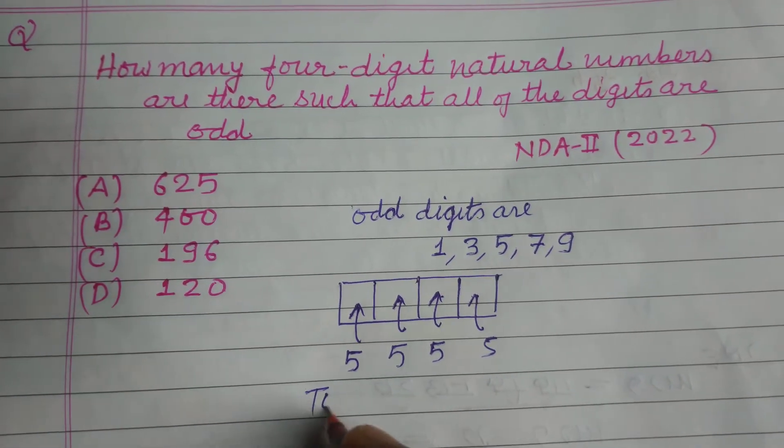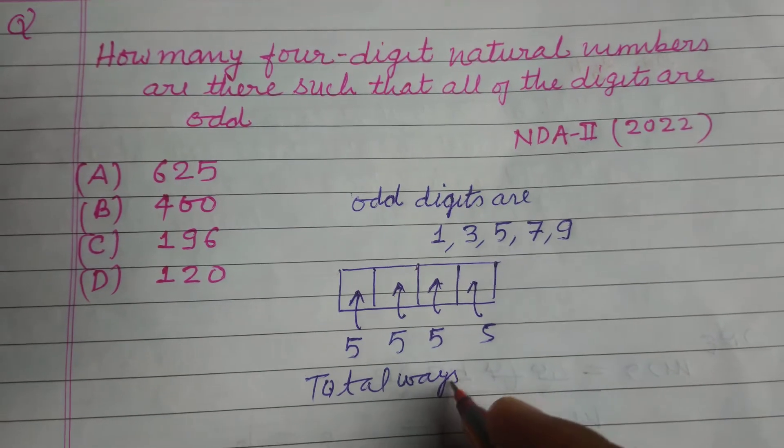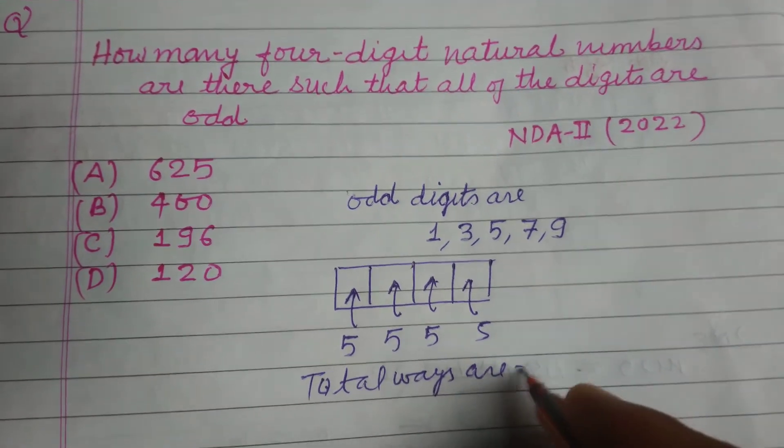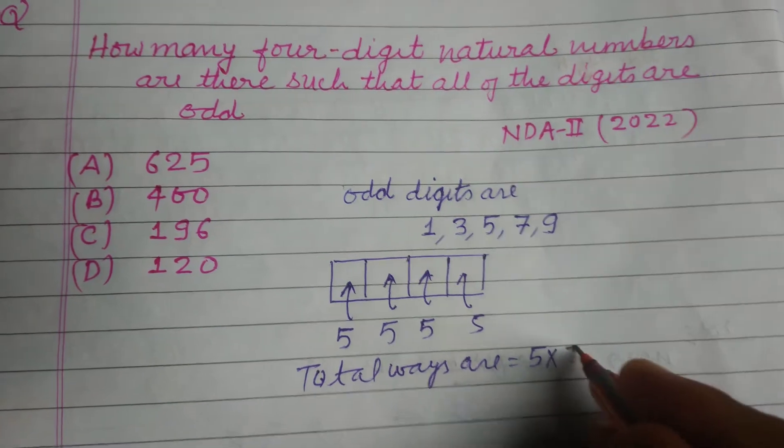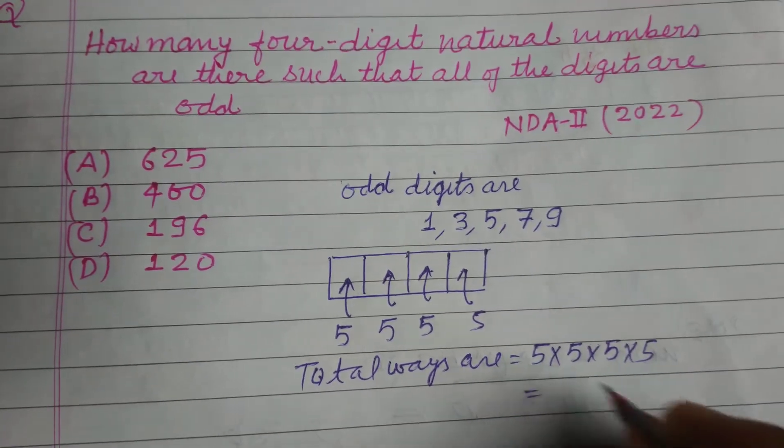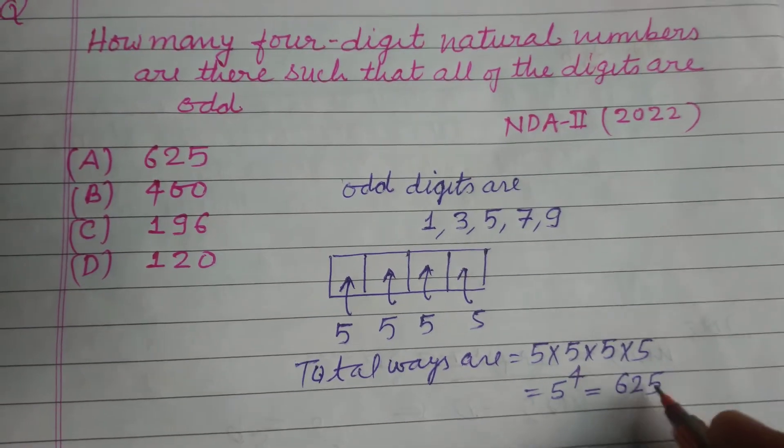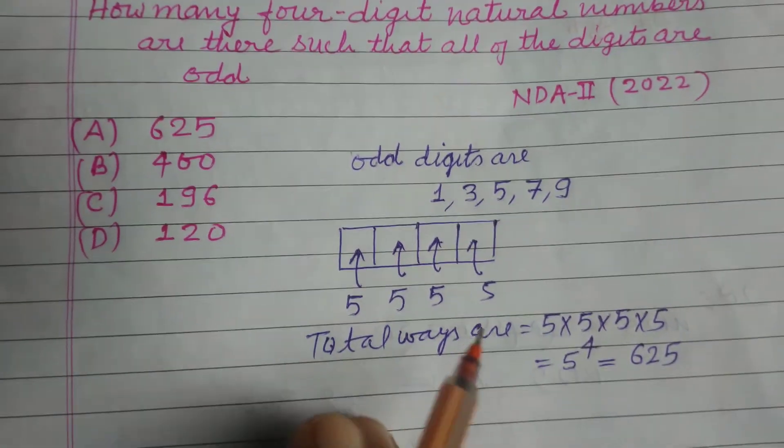Therefore, total ways are five into five into five into five. This is five to the power four which is 625. So the answer to this question is A, 625.